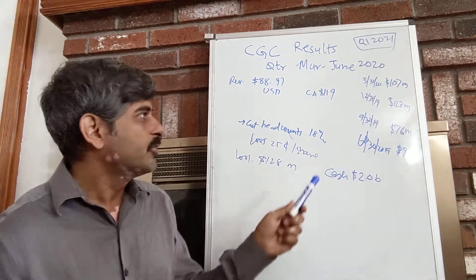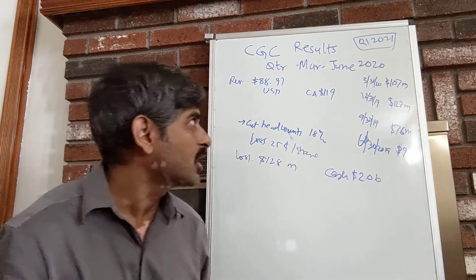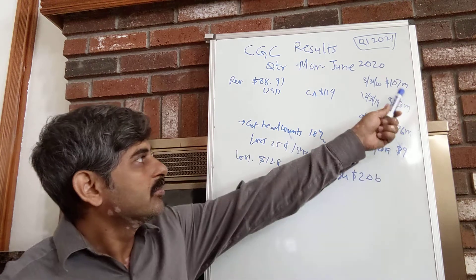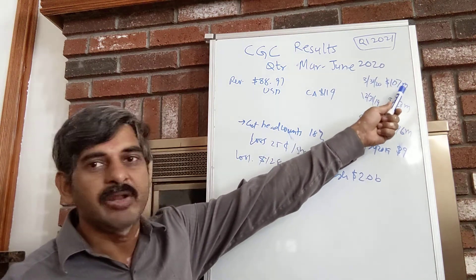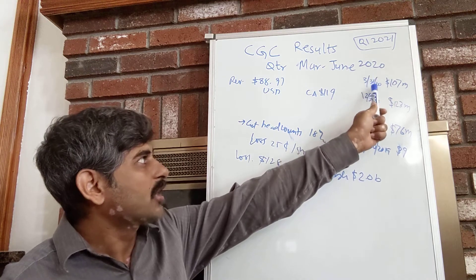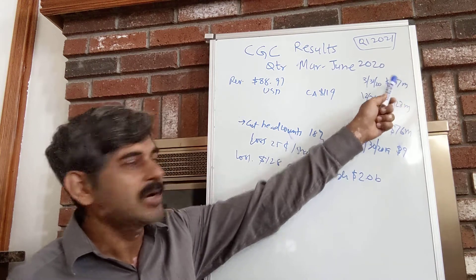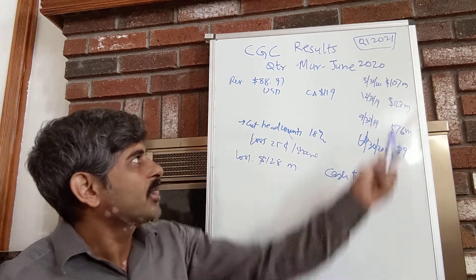So before we do that, let's look at the numbers in the previous quarters. We do know that the numbers were for the most recent quarter $107 million for the quarter ending March 31st, and part of this reason was partly because the pandemic but could have been other reasons as well.